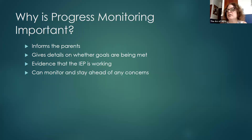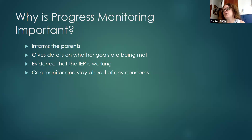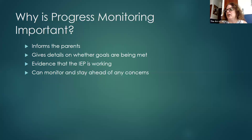Progress monitoring is also important because it gives details on whether goals are being met or not, and if not, what can be done to change that — such as increasing supports, changing the measuring tools, or adding additional time in an area. Evidence that the IEP is working is also important. Goals are based on academic standards, such as the PA core standards developed for math and English language arts in Pennsylvania, connecting what students must know and how they demonstrate that to the curriculum. You may sometimes see a related standard listed below the goal, showing how it correlates to the actual standard.